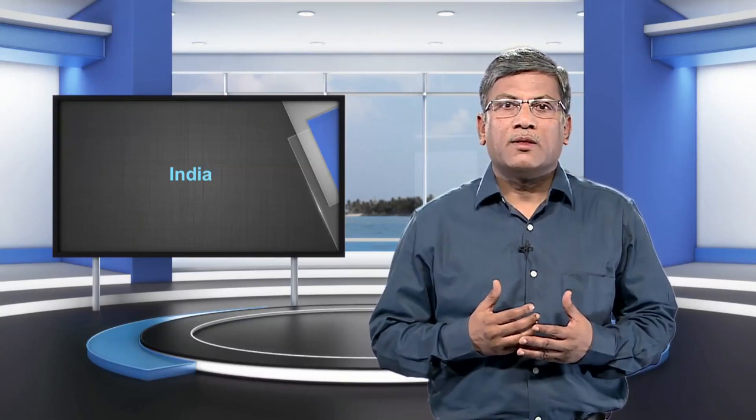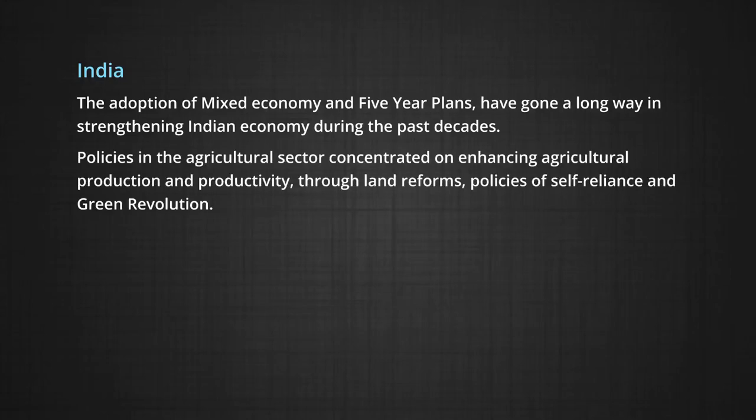Now come to India's situation. Starting from scratch and losing most of its productive lands to partition, India had several challenges to overcome at the time of independence in 1947. The adoption of a mixed economy and five year plans have gone a long way in strengthening the Indian economy. Policies in the agricultural sector concentrated on enhancing production and productivity through land reform policies, self-reliance, and the green revolution.